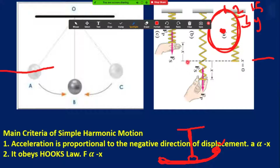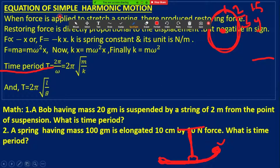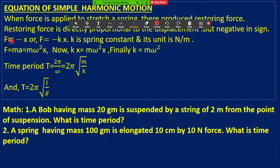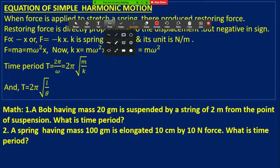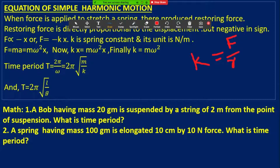Equation of simple harmonic motion: F is directly proportional to the displacement, so F = -KX, where K is the spring constant. The unit of K comes from this equation: since F = KX, K = F/X, which gives us Newton per meter.